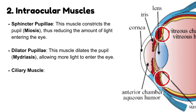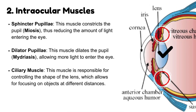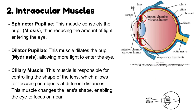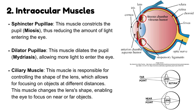Ciliary muscle: this muscle is responsible for controlling the shape of the lens, which allows for focusing on objects at different distances. This muscle changes the lens's shape, enabling the eye to focus on near or far objects. This process is called accommodation.